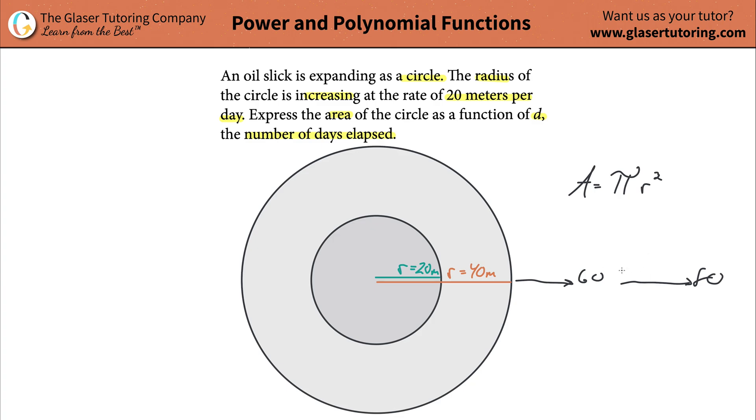Now, the thing is, I know what's going to happen, but what I need to do is somehow manipulate this formula a little bit so that I can get my function, or that the function here can have the variable of day in it, or d. So the question is, what happens to the radius every single day? Well, the radius is going to keep increasing by 20 units. So in other words, the radius will be equal to 20 multiplied by the number of days. Does that make sense?